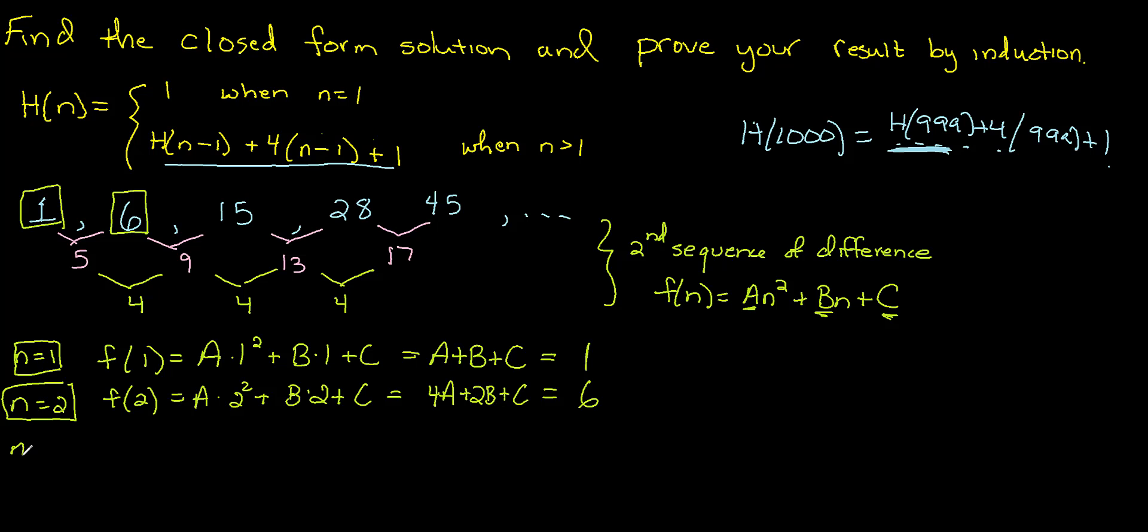I've got three variables, A, B, and C, so I better have three equations and three unknowns. So let me do one more. When n equals 3, we have F(3) equals A times 3 squared plus B times 3 plus C, and I'm going to get 9A plus 3B plus C, and that should equal 15. That's the third term in my sequence.